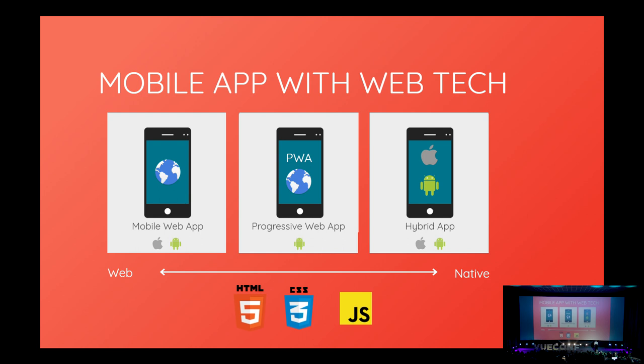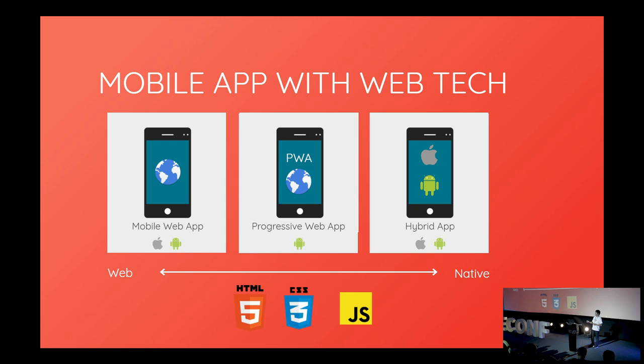So what's actually a hybrid application? It's an application that leans toward the native side of mobile app technology and has an actual mobile application package. The difference between a mobile web app and a hybrid application is that a hybrid application is distributed by app stores — users can go to Google Play or the App Store to download it — whereas mobile web apps or progressive web apps are applications running in a browser that you access by typing in a URL.